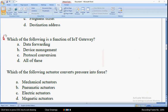Sixth question: which of the following is a function of IoT gateway? So friends, the answer is option C: protocol conversion. Mark option C as the correct answer for the sixth question.